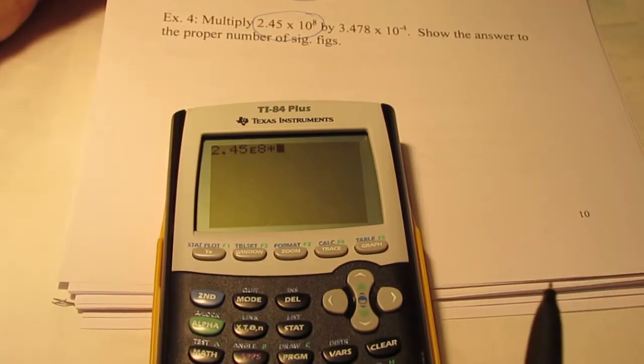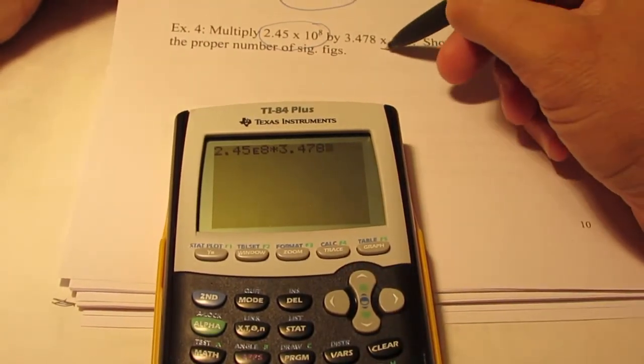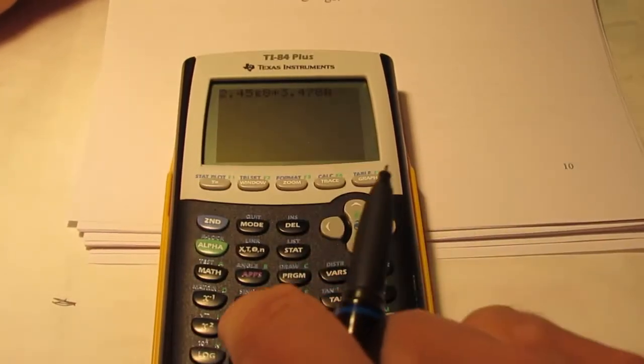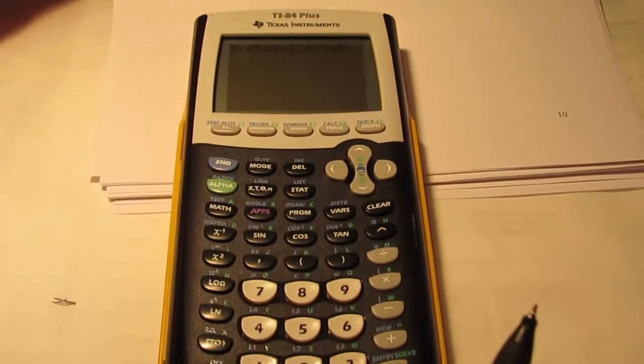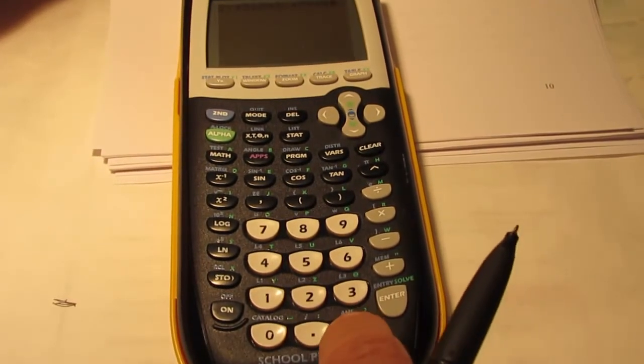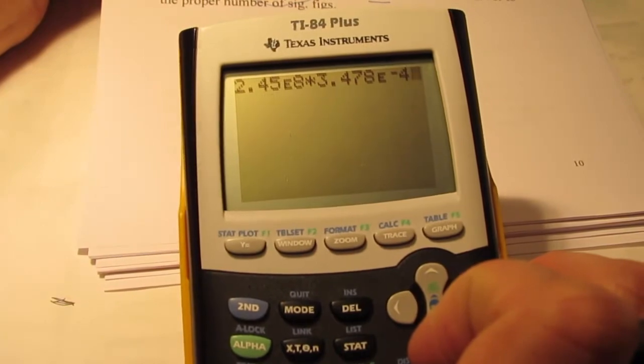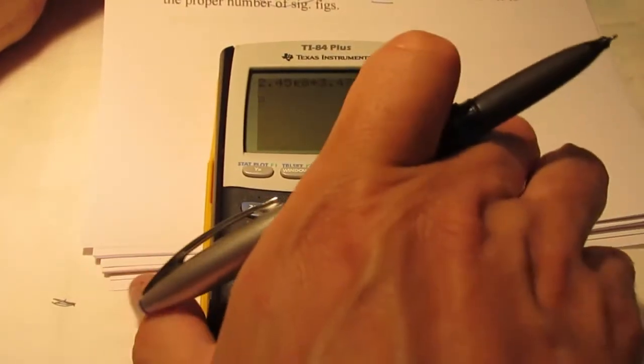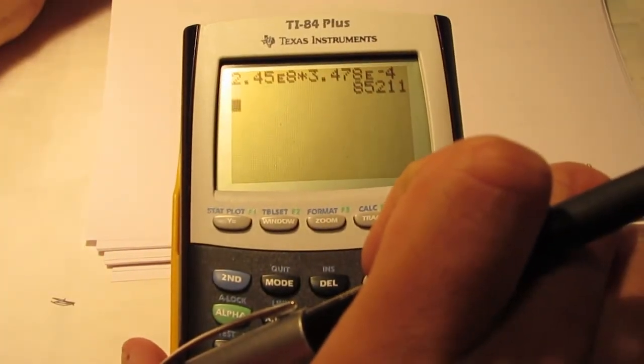Now we're going to multiply that by 3.478, and we want to go times 10 to the negative fourth. So we're going to go 2nd EE again, and we're not going to press the minus sign. We're going to press the negative button right down here to the negative fourth. So my calculator looks like that right now. I'm going to try that with yours and make sure it looks like mine. Then we can press enter, and my calculator says 85,211.